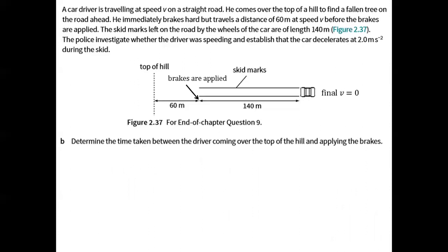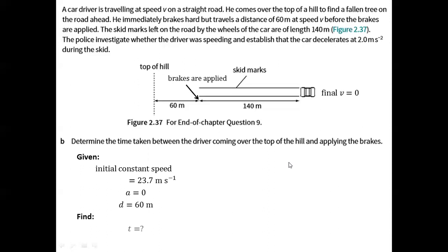Next question: determine the time taken between the driver coming over the top of the hill and applying the brakes. In this part of the motion, the car was traveling at a constant speed of 23.7 meters per second with no change in direction, so acceleration is zero. The distance traveled was 60 meters. Using speed equals distance over time, we have time equal to 60 divided by 23.7, giving us a time of 2.53 seconds.